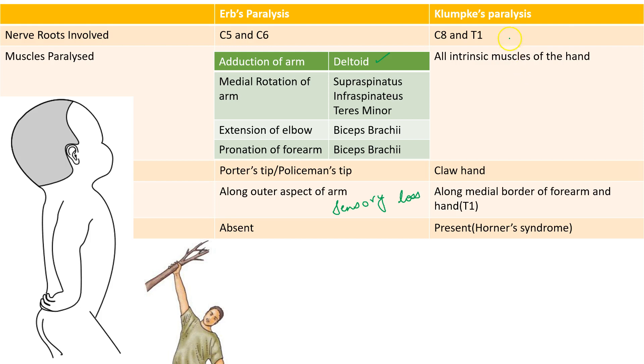So, here, there is involvement of C8 and T1 and all the intrinsic muscles of the hand are involved, resulting in claw hand. So, there is basically ulnar nerve paralysis.